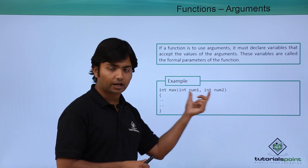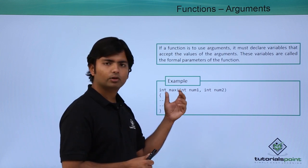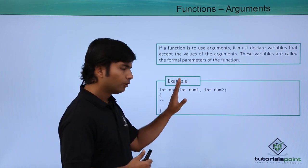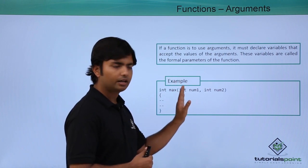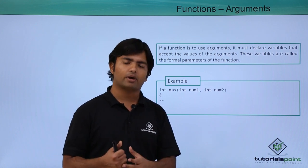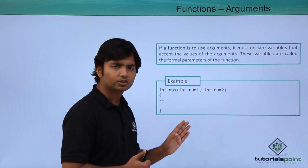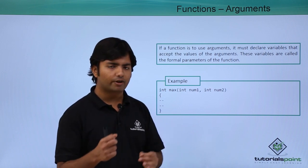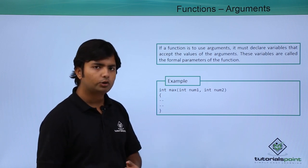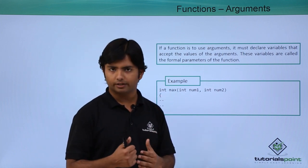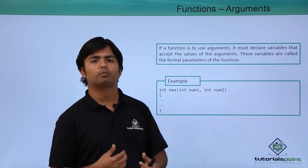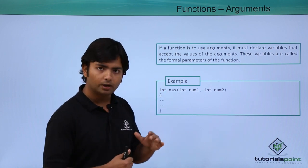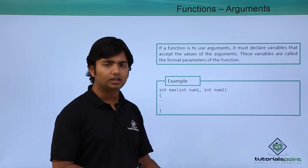If you want to pass some values into a function for processing, you can pass parameters or arguments. For example, in the max function, I want to check which of two numbers is greater, so I supply values with int num1 and int num2 — these are the parameters. Whenever I call this function I will have to pass these two values. After processing, if you don't want to return any value, you can simply write void.